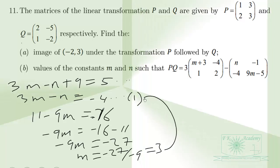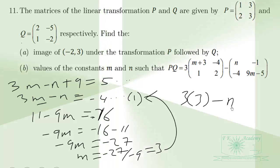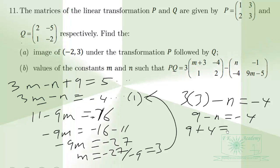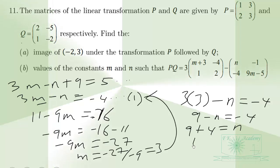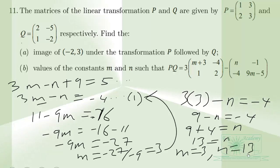Substituting M = 3 into equation 1: 3(3) - N = -4, so 9 - N = -4, which gives N = 13. Therefore M = 3 and N = 13.